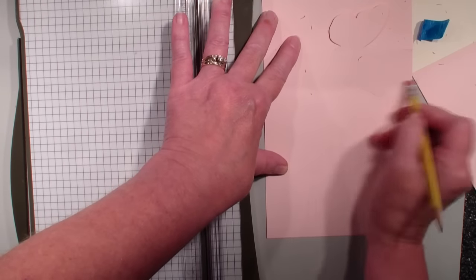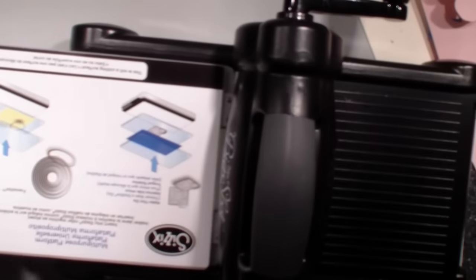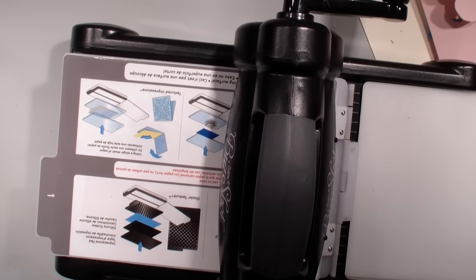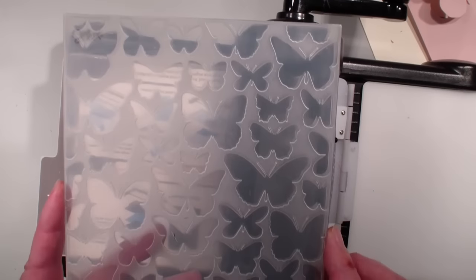Now I want to emboss my flaps. So I'm going to set that personal trimmer over. I'm going to now bring back that Big Shot. I'm going to use just tab 1. I'm going to use that new Flutterby Embossing Folder. These embossing folders are bigger than we've had before. They're 6 inches by 6 inches.